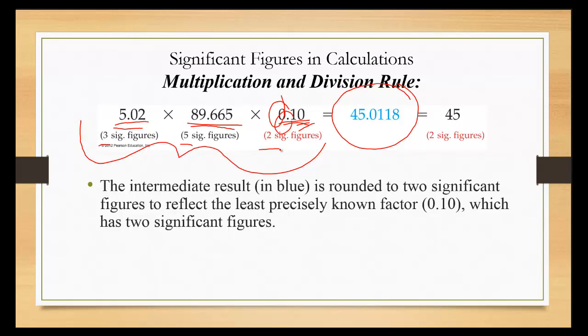Therefore, two is the fewest. I'm going to round this off to two significant figures, which would be 45. The next number is four or less, so therefore I don't change that number. I don't round it up or down. It just stays the same.